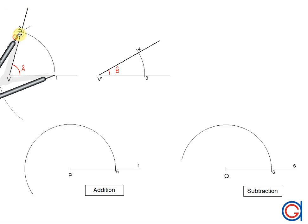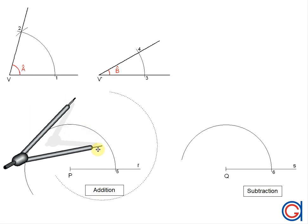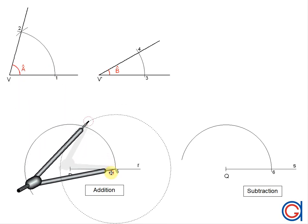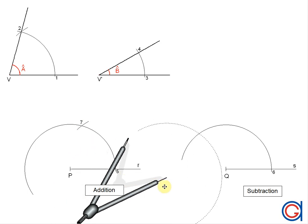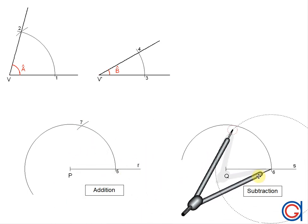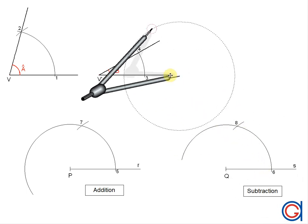Now setting our compass to radius 1,2 from angle A, we are going to transport this length to the previously drawn arc on ray R to the left, until it cuts the previously drawn arc at a new point that we will call 7. This intersection, if joined with vertex P, would be the transportation of angle A. We are going to transport the length 1,2 again to the previously drawn arc on ray S, setting our compass on point 6 and scribing an arc until it cuts the previously drawn arc at a new point 8 as can be seen here.